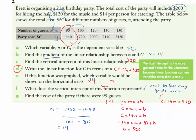For part g, we need the cost for 95 guests. That means n equals 95. Substituting into c equals 14 times 95 plus 320 gives c equals 1330 plus 320, which equals $1650.